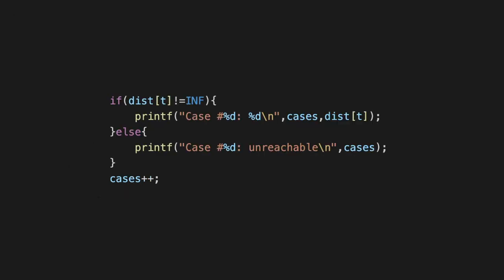For the output, look up dist[t]. The only detail to handle is unreachability: if t is completely unreachable from s — which is possible since the graph may not be connected — your output will differ. Distinguishing that case is the key detail to keep in mind.